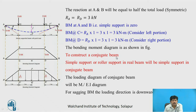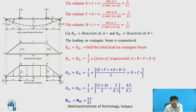To construct the conjugate beam: since the supports are simply supported in the real beam, they remain simply supported in the conjugate beam, and the loading diagram is the M upon EI diagram. The ordinate E*C* equals the bending moment at C divided by EI for the AC portion, which is 3/EI. Similarly, F*D* equals the bending moment at D divided by EI, which is also 3/EI. The ordinate H*J* in between also has a bending moment of 3, so it is 3/EI.